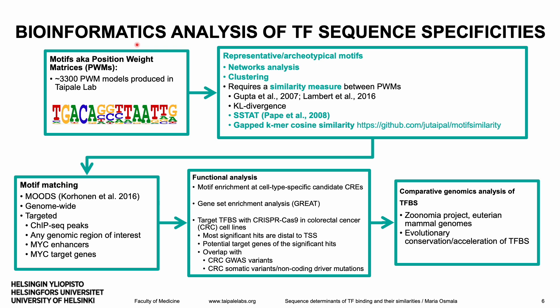There is a lot of redundancy in the set of 3,000 motifs, so one usually performs a network or clustering analysis to find a smaller set of representative motifs. This analysis requires a similarity measure between motifs, and many such measures have been developed. As the motifs are probability distributions, the Kullback-Leibler divergence has been used to quantify similarity. However, KL divergence may consider monomers and dimers highly similar, which is not desirable. Therefore, more advanced similarity measures have been developed, such as EstStat and a measure based on capped k-mer cosine similarity, implemented by Professor Taipale.